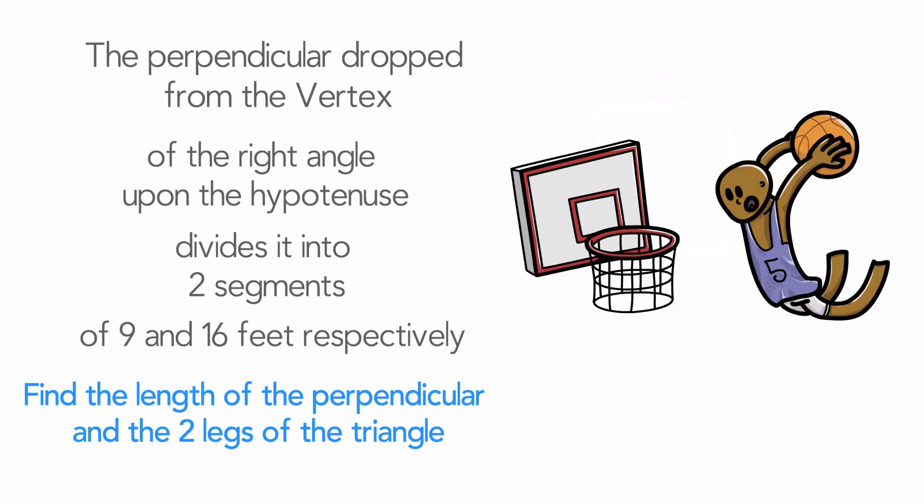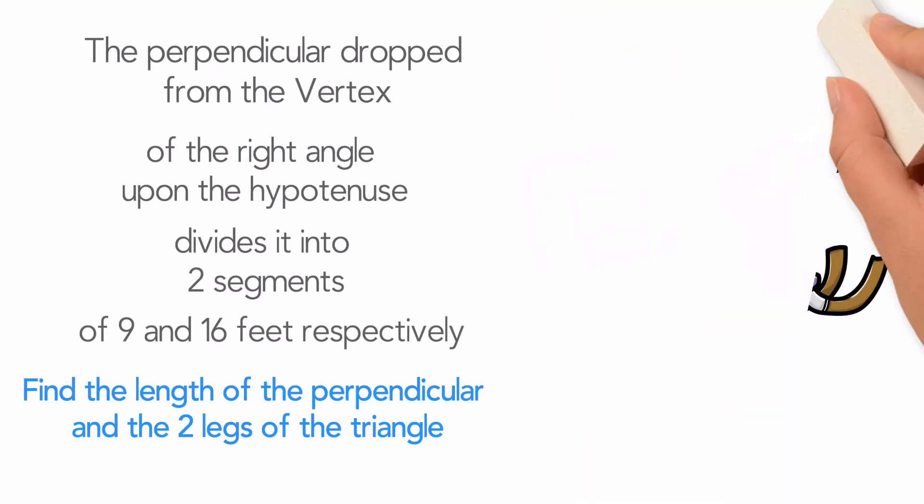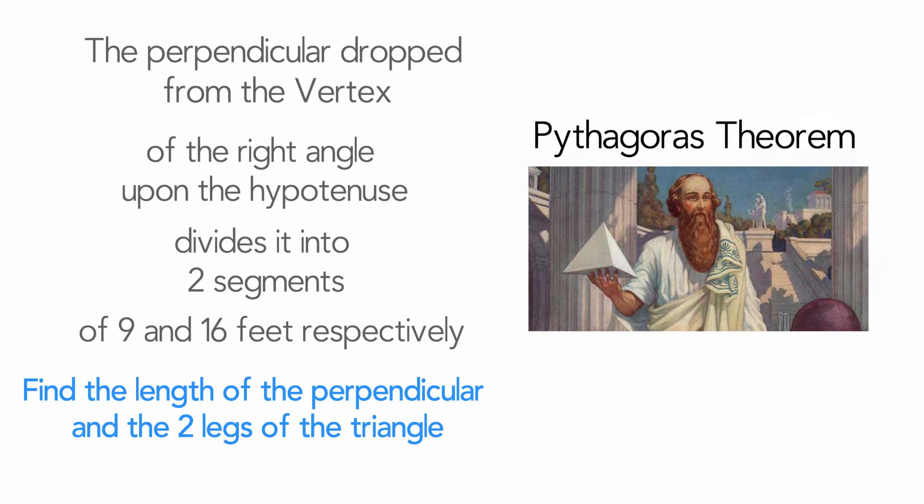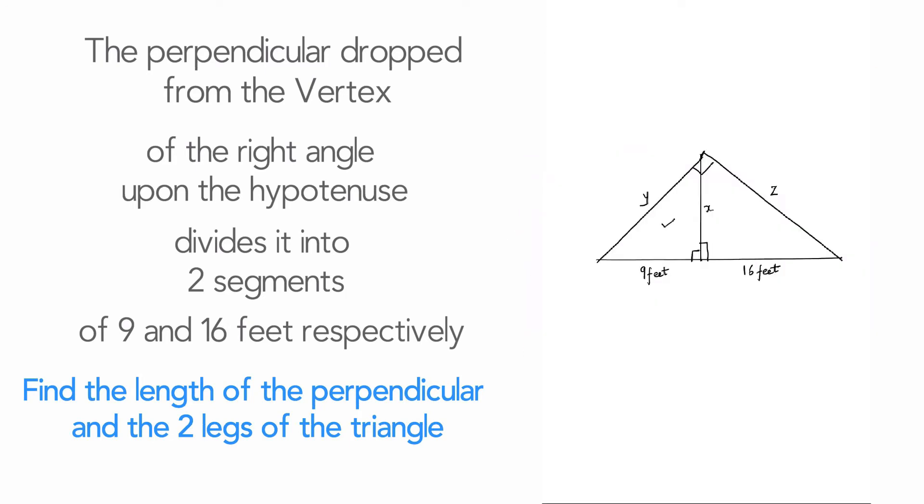So our first method in solving this problem is based on the fact that we have three right angle triangles. We are going to use the Pythagoras theorem to arrive at an answer. Right, so here's our figure once again. Let's first tackle this triangle. We can say using Pythagoras theorem that y² = x² + 9². And now going to this triangle out here, we can say z² = x² + 16².